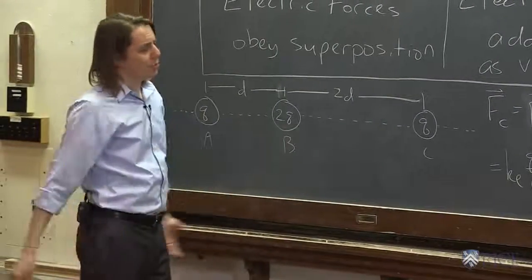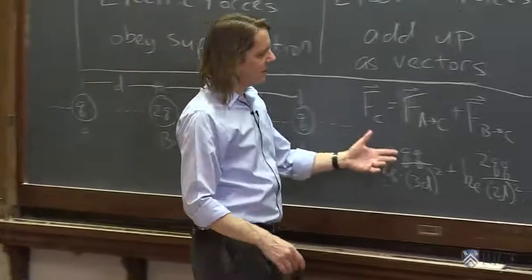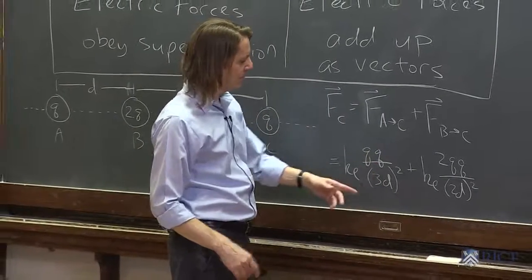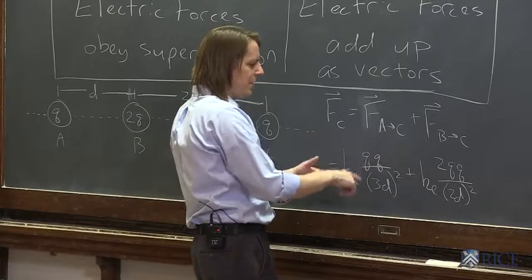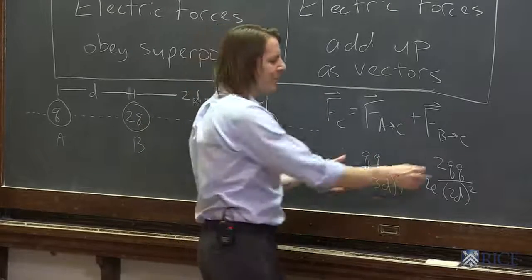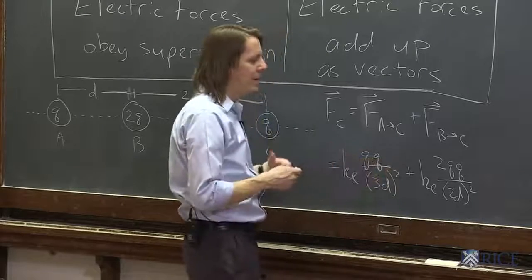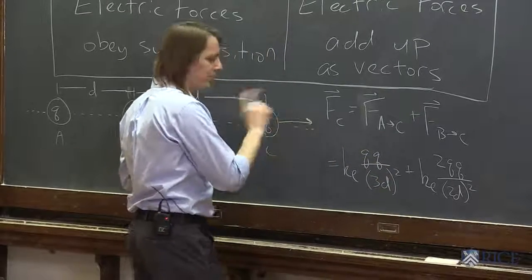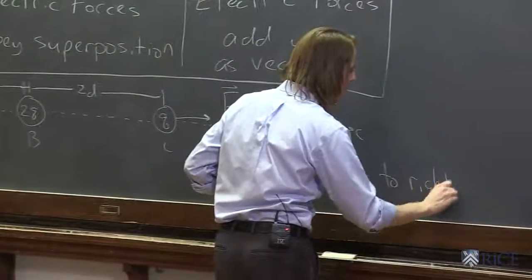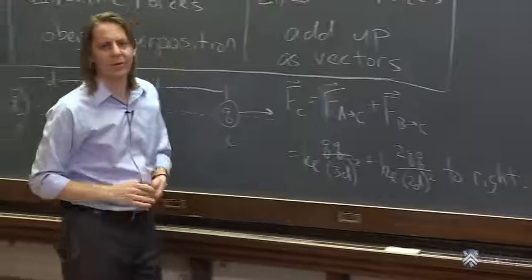And you could simplify that if you want. They're all going to be KE Q squared over D squared. And what would you get? This would be 2 plus 1 is 3, and this would have a different denominator. It'd be a mess. But you could simplify that or plug in numbers or whatever you want. And if you want to give it as a vector, you'd know it's going to go this way, because both components were to the right. We'll look at it with vectors next.